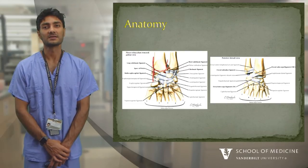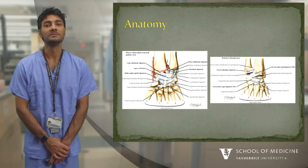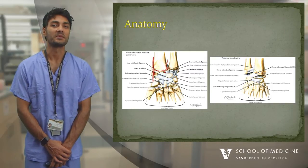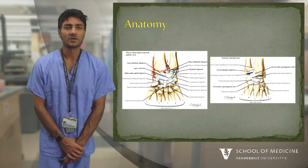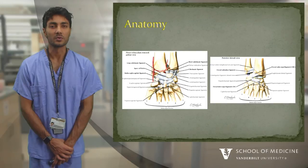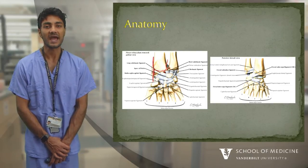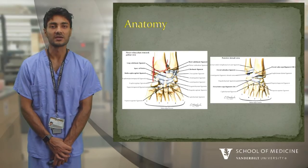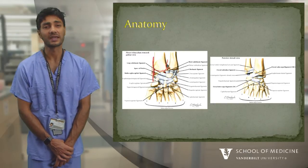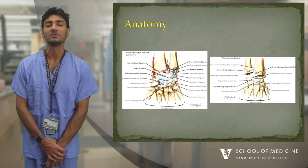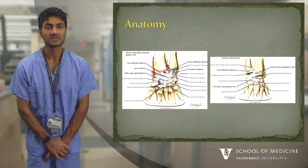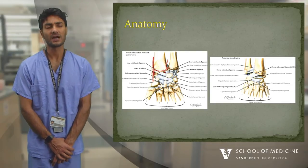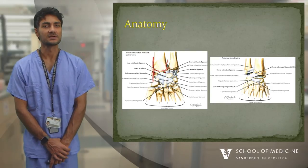A major deforming force is the brachioradialis, which attaches along the radial styloid — as you pull axial traction, that styloid piece will be deformed by it. Ligamentotaxis is the concept of pulling traction to exploit ligamentous attachments: traction stretches ligaments and pulls any attached bone fragments along with them, helping achieve reduction. This works as long as bone fragments have some tissue attachment — for free pieces, ligamentotaxis won't help.